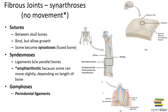Among fibrous joint subtypes, sutures are a synarthrotic joint located only between the bones of the skull. The edges of the bones are interlocked and bound together at the suture by dense fibrous connective tissue.